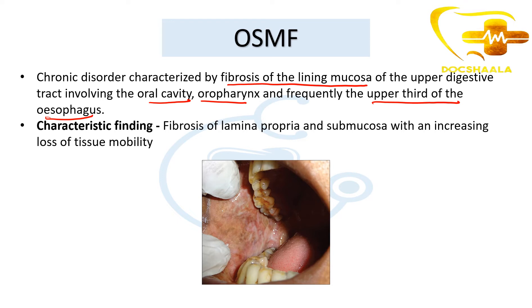The characteristic finding we see in this mucosa is fibrosis of the lamina propria and submucosa, with an increasing loss of tissue mobility. Tissue mobility is lost.